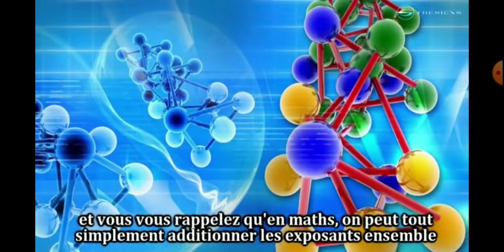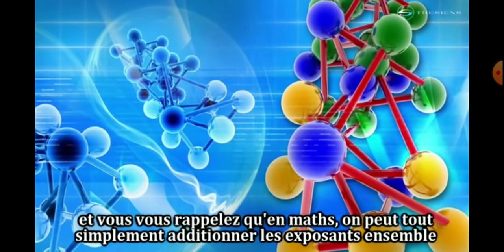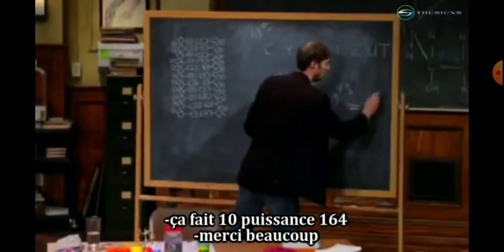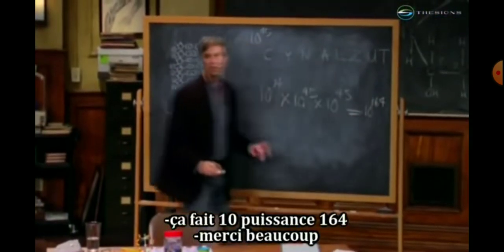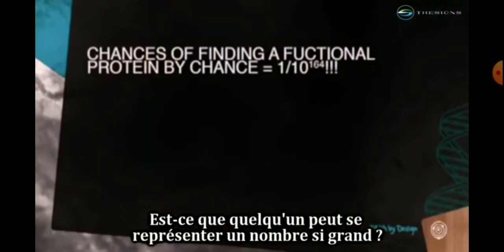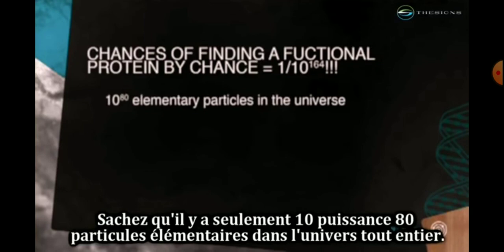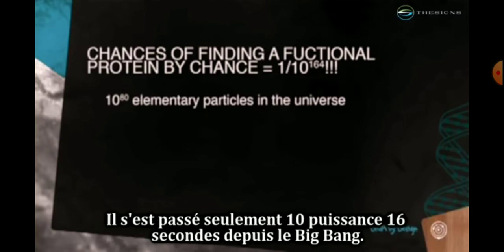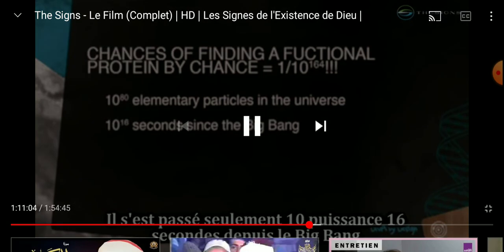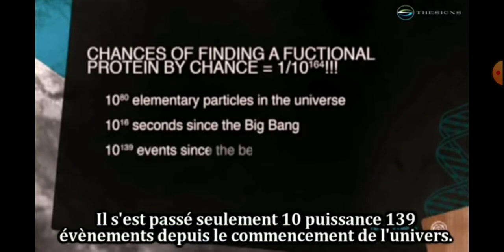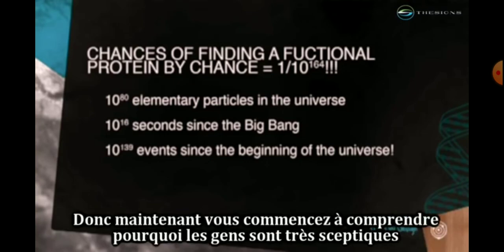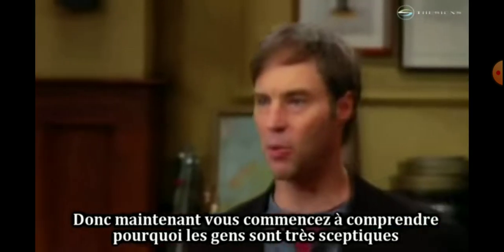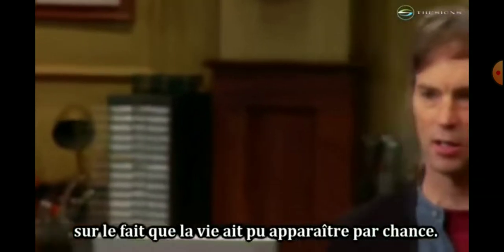You can add the exponents when multiplying exponential numbers. Can anyone get their mind around a number that big? There are only 10 to the 80th elementary particles in the entire universe. There are only 10 to the 16th seconds since the Big Bang. There are only 10 to the 139th total events since the beginning of the universe. Now you're starting to understand why people are very skeptical that the chance hypothesis is going to do the job.